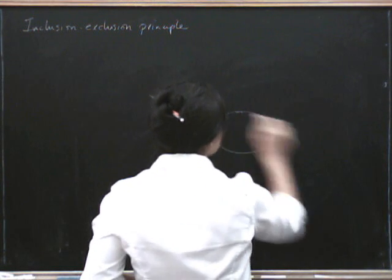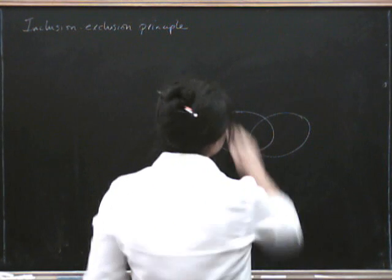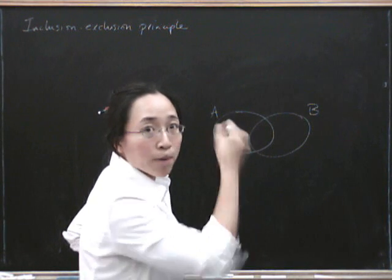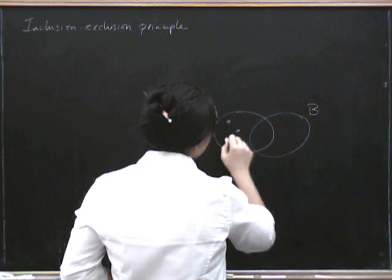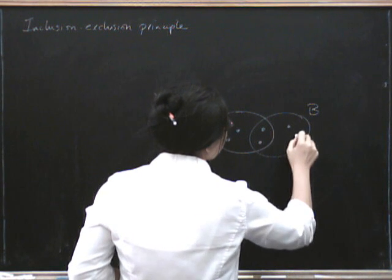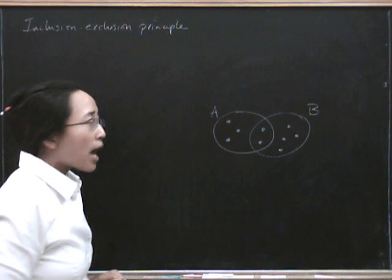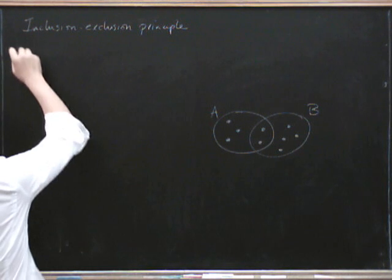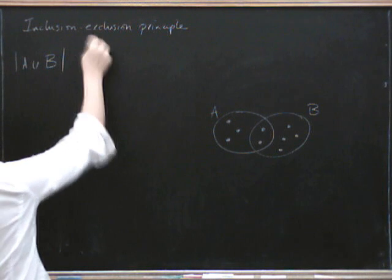I'm going to draw a very crude Venn diagram. Here's a set and another set. Let's call this set A and let's call this set B, and I'm just going to draw some blobs for elements in this set. There are three elements in here, two in the intersection, and maybe four over there. So the question is, how many elements are there in A union B?